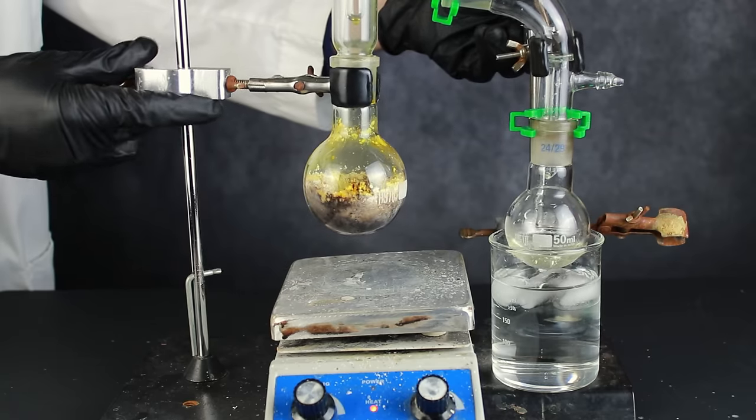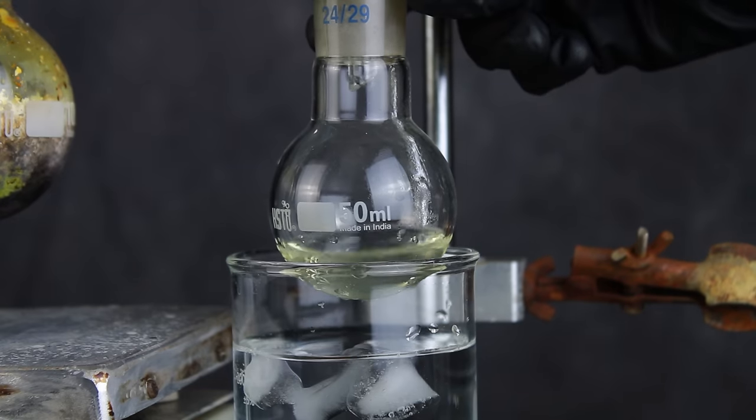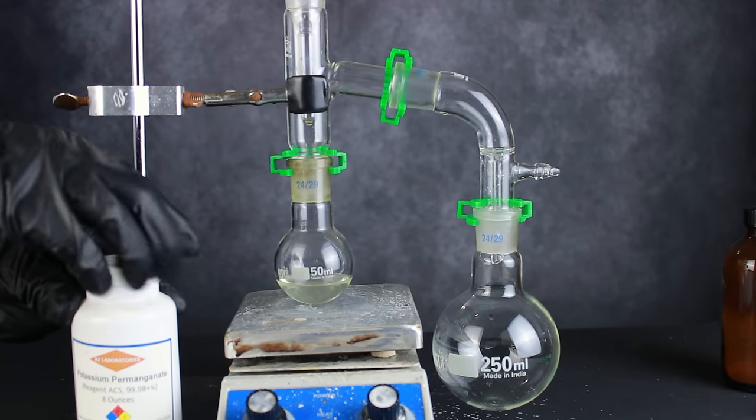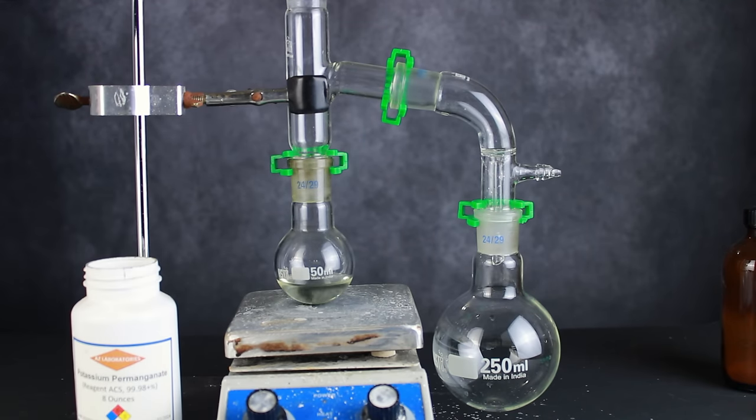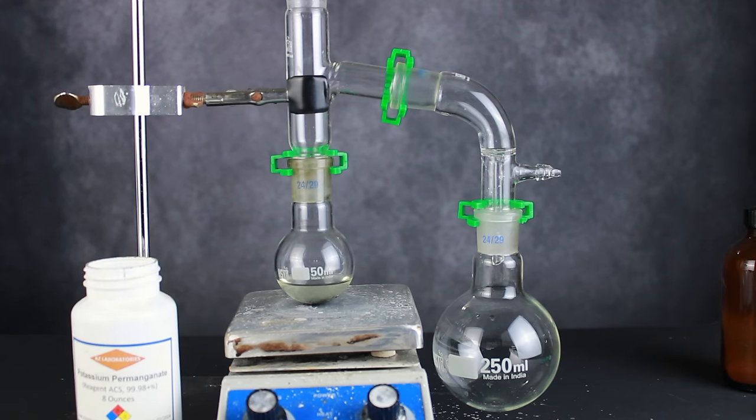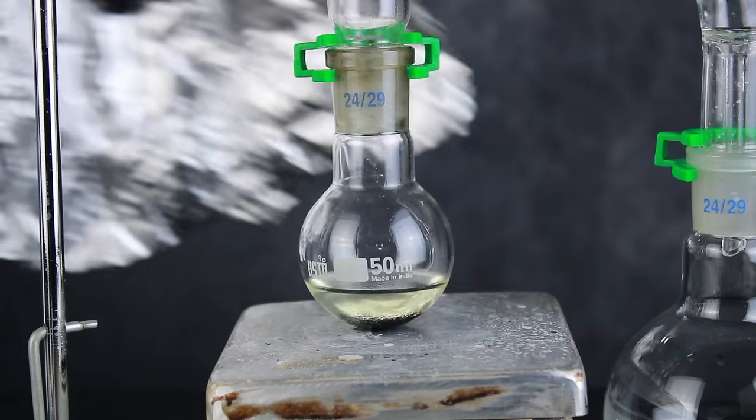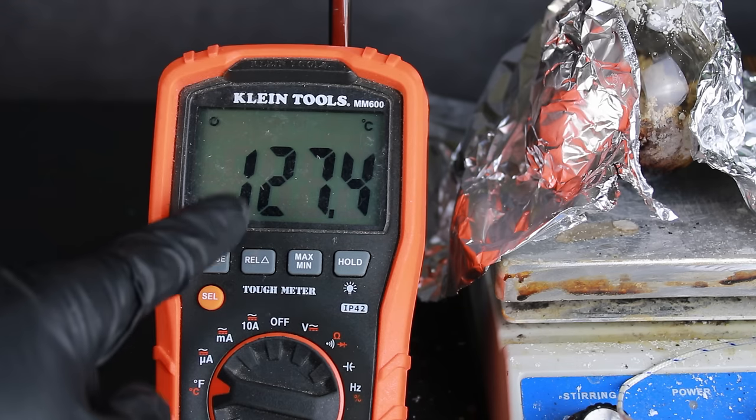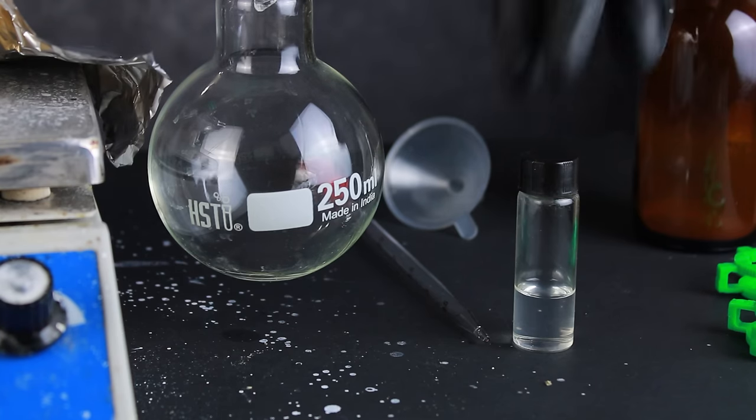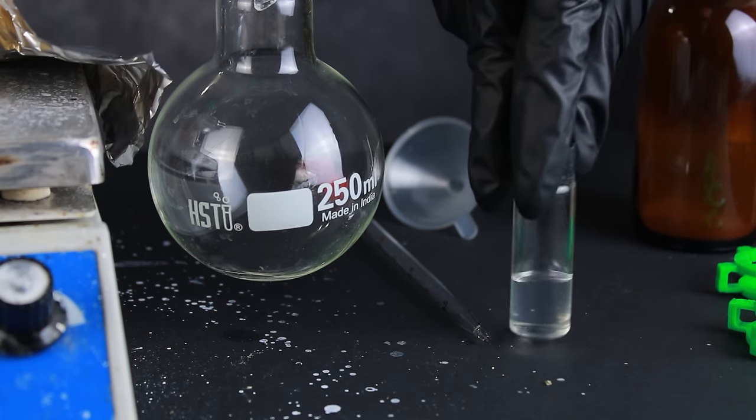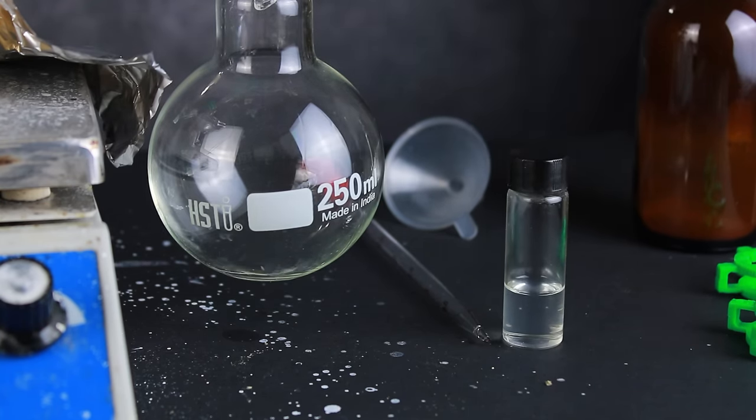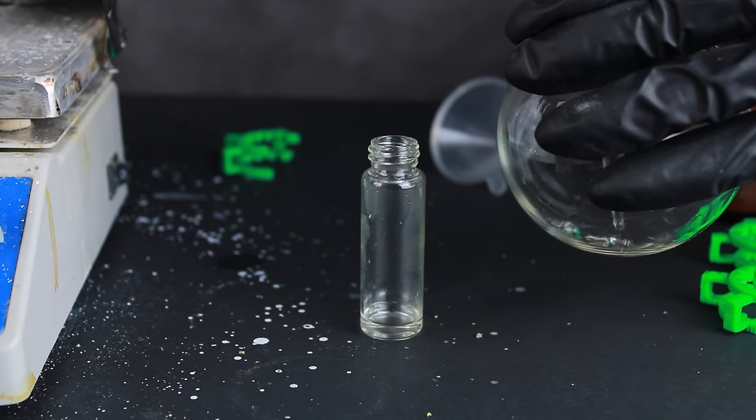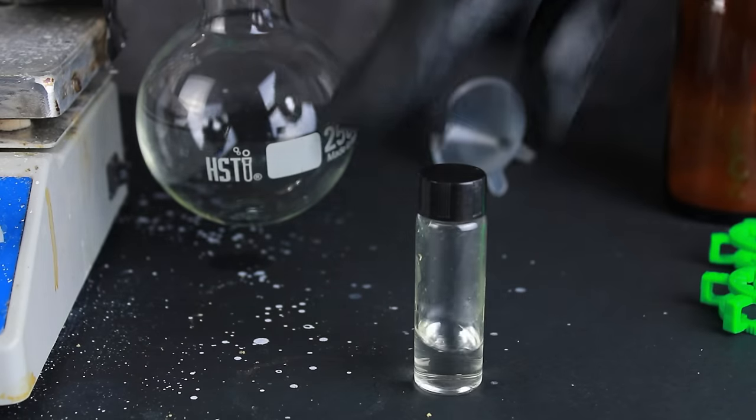But the end product still smelled acrid and garlicky from the organosulfur compounds tainting it. So to clean it up, I set up another simple distillation, and added a small spoonful of potassium permanganate to the acetic anhydride to destroy the sulfurous contaminants. This time, I made sure to isolate the separate fractions during the distillation. The fraction that came over below 130 degrees contained most of the remaining organosulfur compounds, along with other contaminants like acetic acid. The higher boiling fraction, on the other hand, held most of the acetic anhydride, and if you try this synthesis yourself, this is the fraction you want to keep.